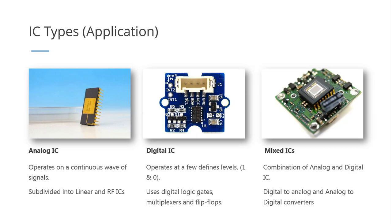There are also ICs that process both analog and digital signals — we call them hybrid, or in some literature, mixed ICs. One of the best examples are ICs that convert digital signals to analog signals and vice versa: DACs or digital-to-analog converters, and ADCs or analog-to-digital converters. So we have the analog IC, the digital IC, and the mixed or hybrid ICs.